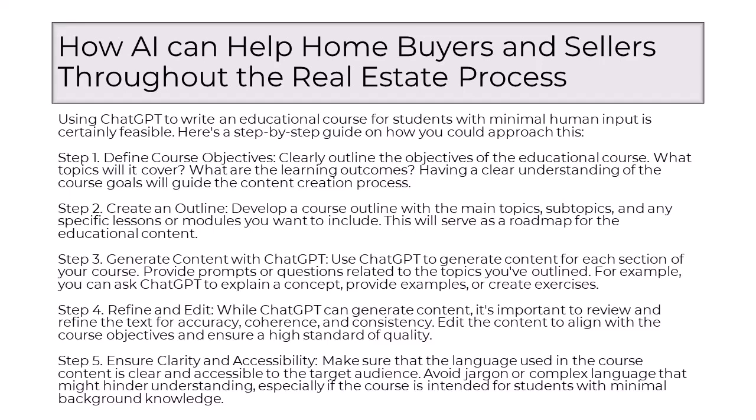Step 4: Refine and edit. While ChatGPT can generate content, it's important to review and refine the text for accuracy, coherence, and consistency. Edit the content to align with the course objectives and ensure a high standard of quality. Step 5: Ensure clarity and accessibility. Make sure that the language used in the course content is clear and accessible to the target audience. Avoid jargon or complex language that might hinder understanding, especially if the course is intended for students with minimal background knowledge.